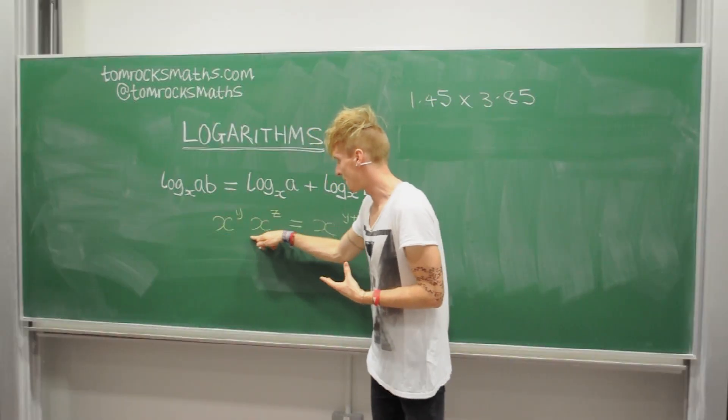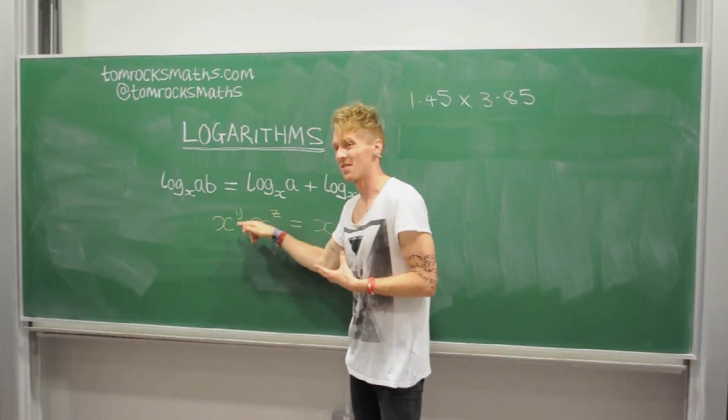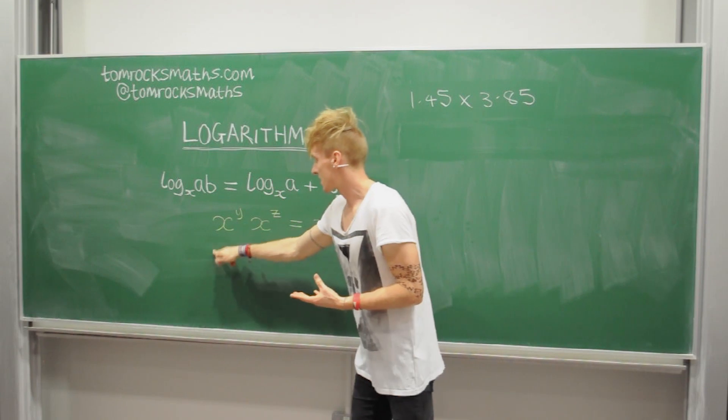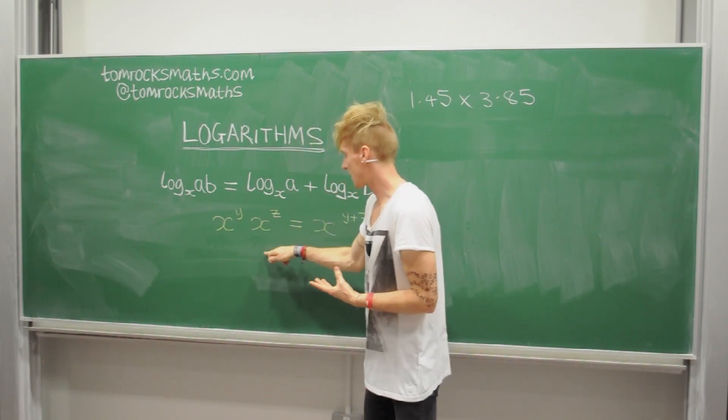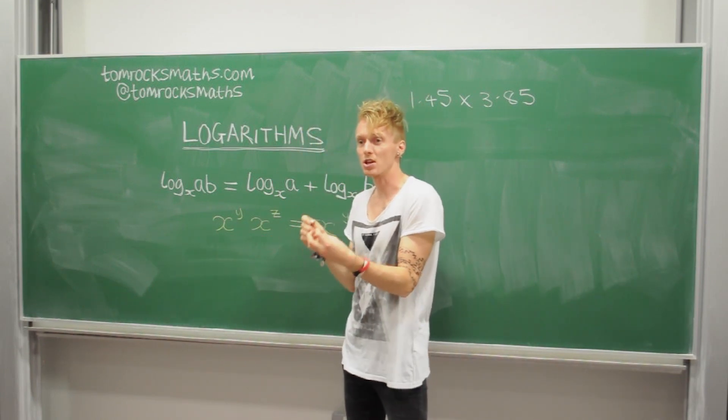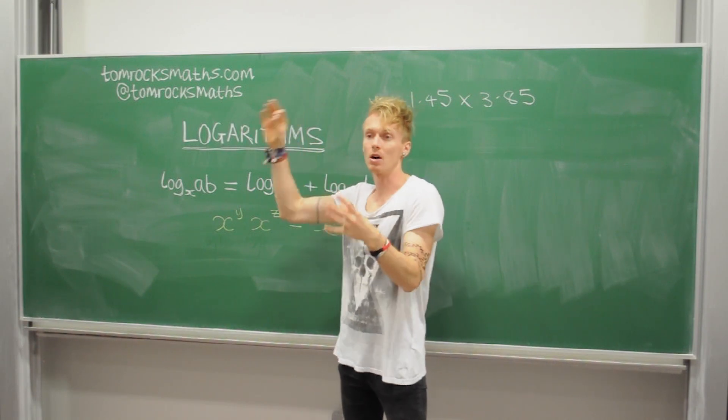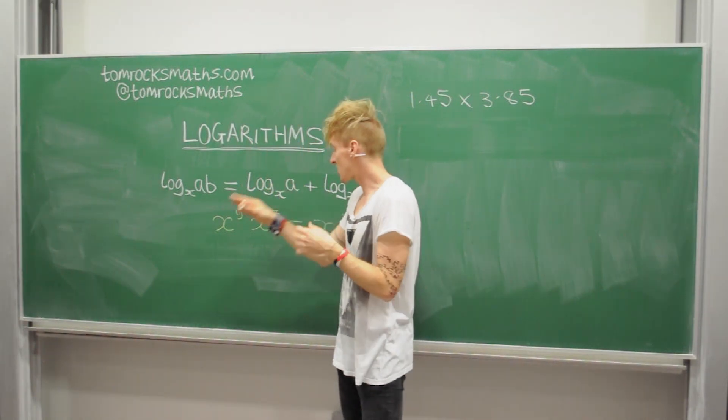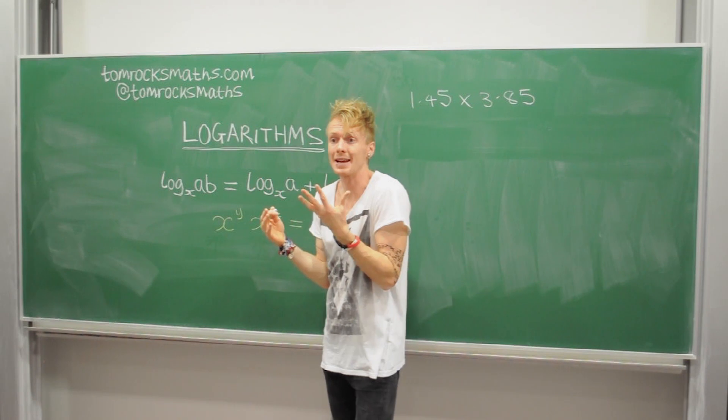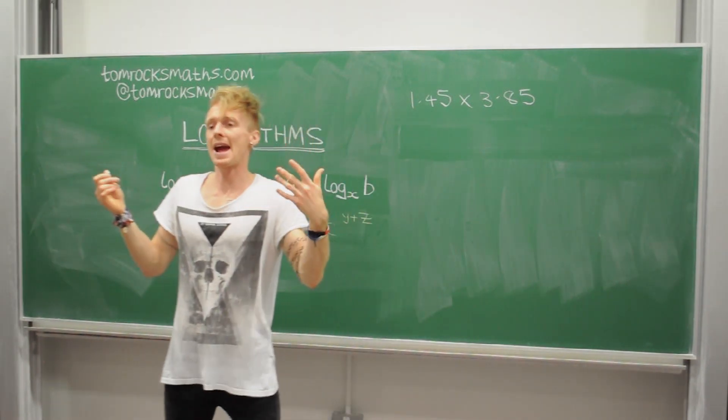Our starting point is going to be this power law. Both of our two numbers are written in terms of x. So this is our first number, this is our second number, and both of them are written in terms of x to the power of something. So here x, we have a choice of what that can be. So I'm going to say let x be 10.